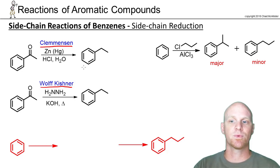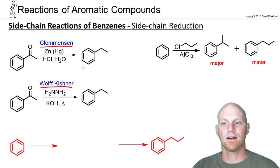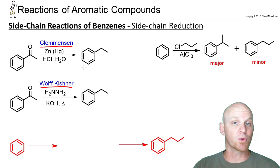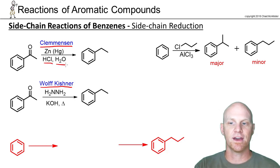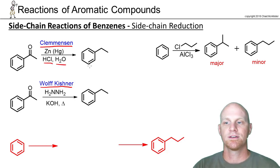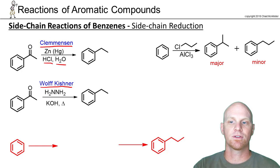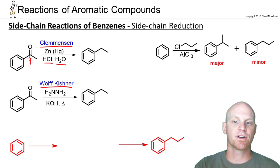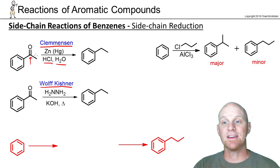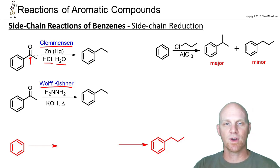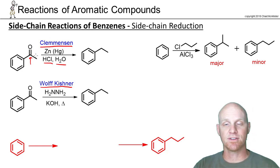In the Clemmensen reduction, we use a zinc amalgam — that's zinc with mercury — along with HCl and water. Notice that it is a complete reduction of the carbonyl. It's important to note this only works for ketones and aldehydes, not for esters or similar functional groups.